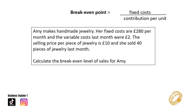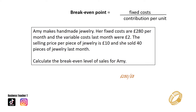Amy makes handmade jewellery. Her fixed costs are £280 per month and variable costs last month were £2 per unit. The selling price per piece of jewellery is £10 and she sold 40 pieces last month. Calculate the break-even level of sales for Amy. Fixed costs are £280. Contribution per unit is £10 minus £2, which equals £8. So break-even is 280 divided by 8, giving a break-even level of sales of 35 units.